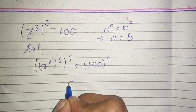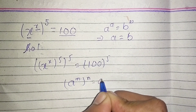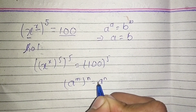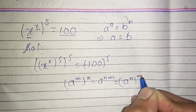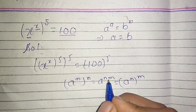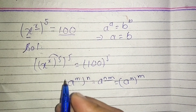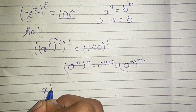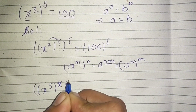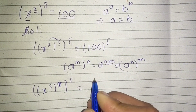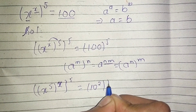We have the identity that (a^m)^n = a^(mn) = (a^n)^m. Since multiplication is associative, we can transpose these powers, so it will become (x^5)^(5x) = (10^2)^5.